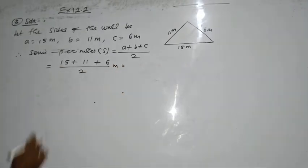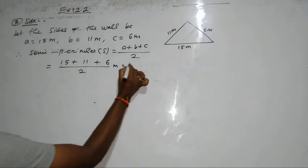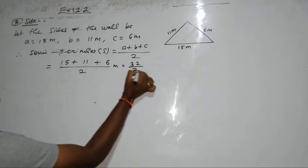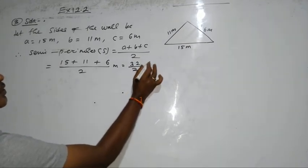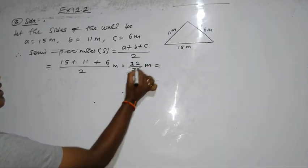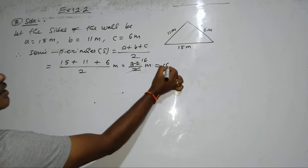All together, we can add it now. It is 26 plus 6, 32, divided by 2. 32 divided by 2 meter. So, 2 into 16 is 32, therefore 16 meter.